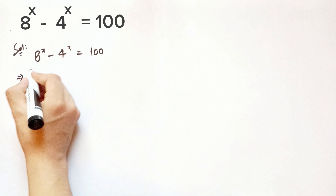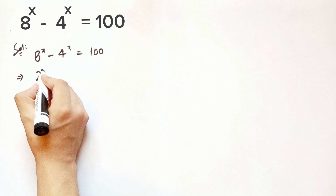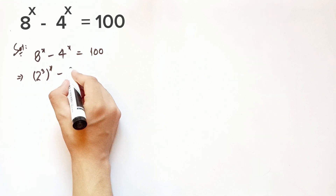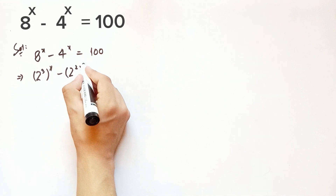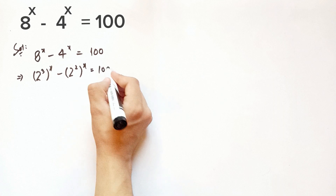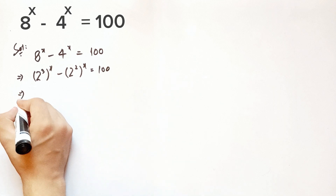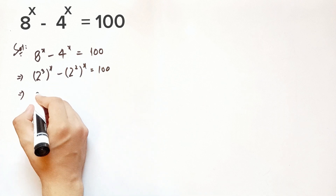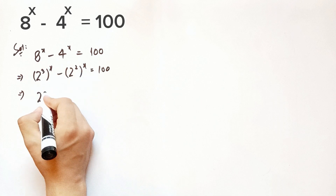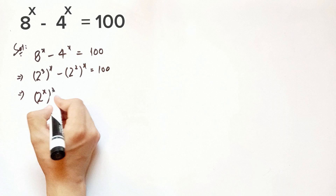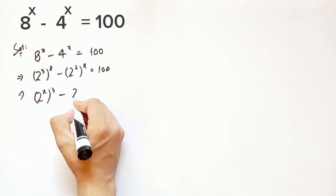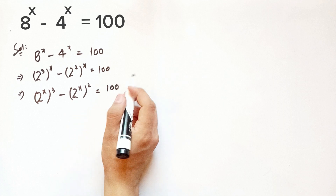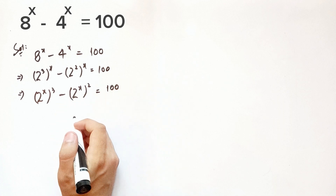Now I can write 8 as 2 cubed to the power of x, and 4 as 2 squared to the power of x, equals 200. Since the powers are in multiplication, I can switch them and write this as (2 to the x) whole cubed minus (2 to the x) whole squared equals 200. Now this equation is ready for substitution.